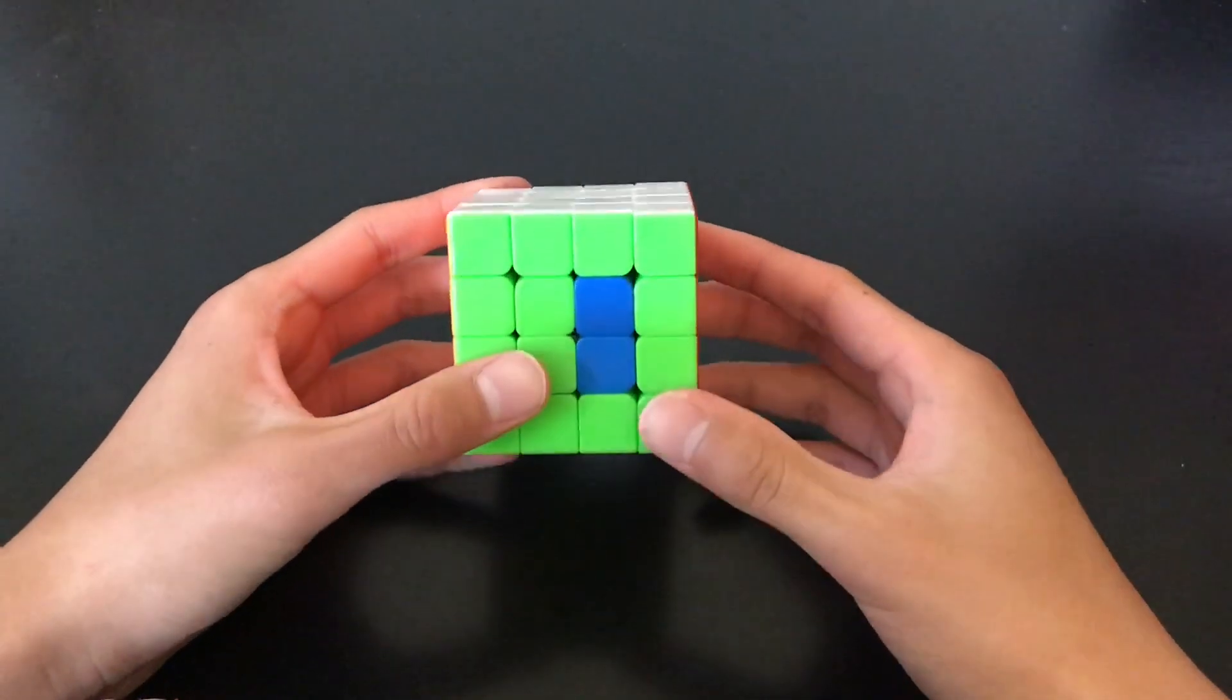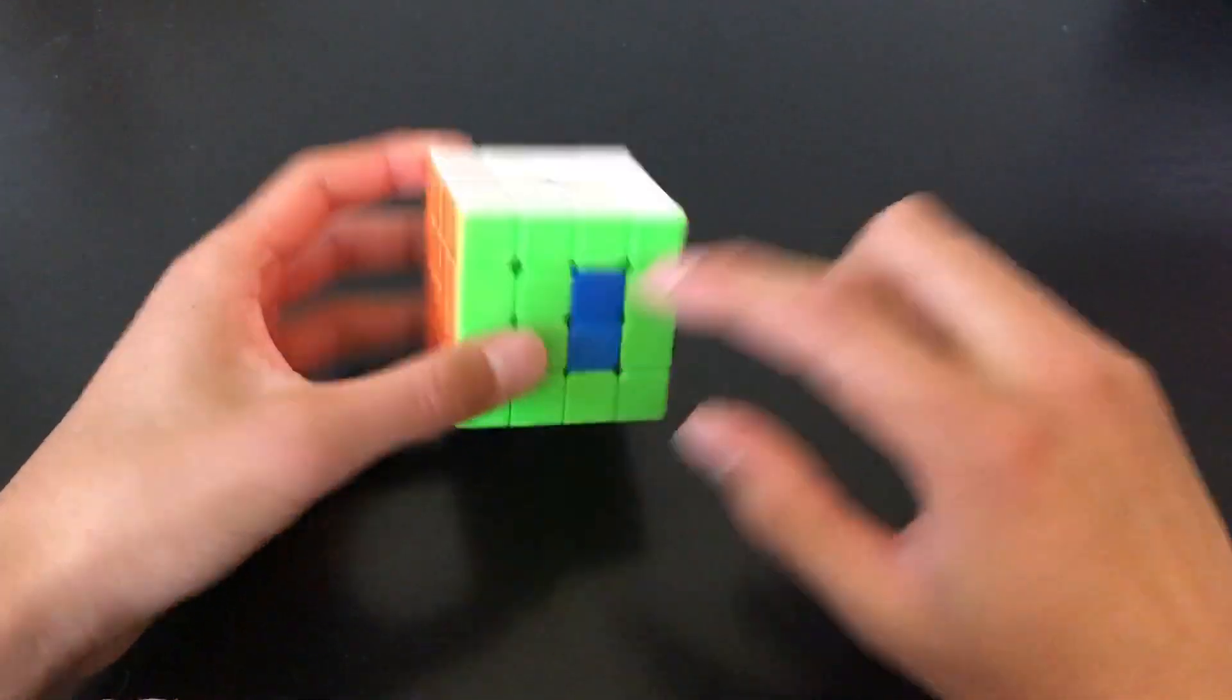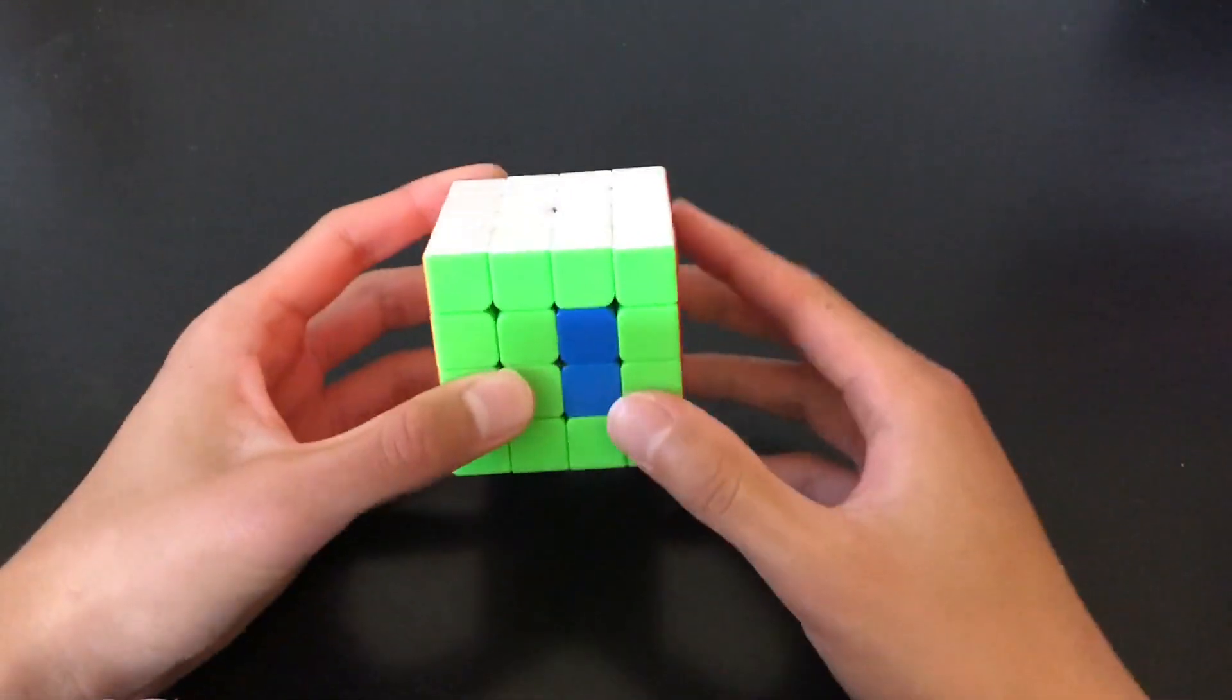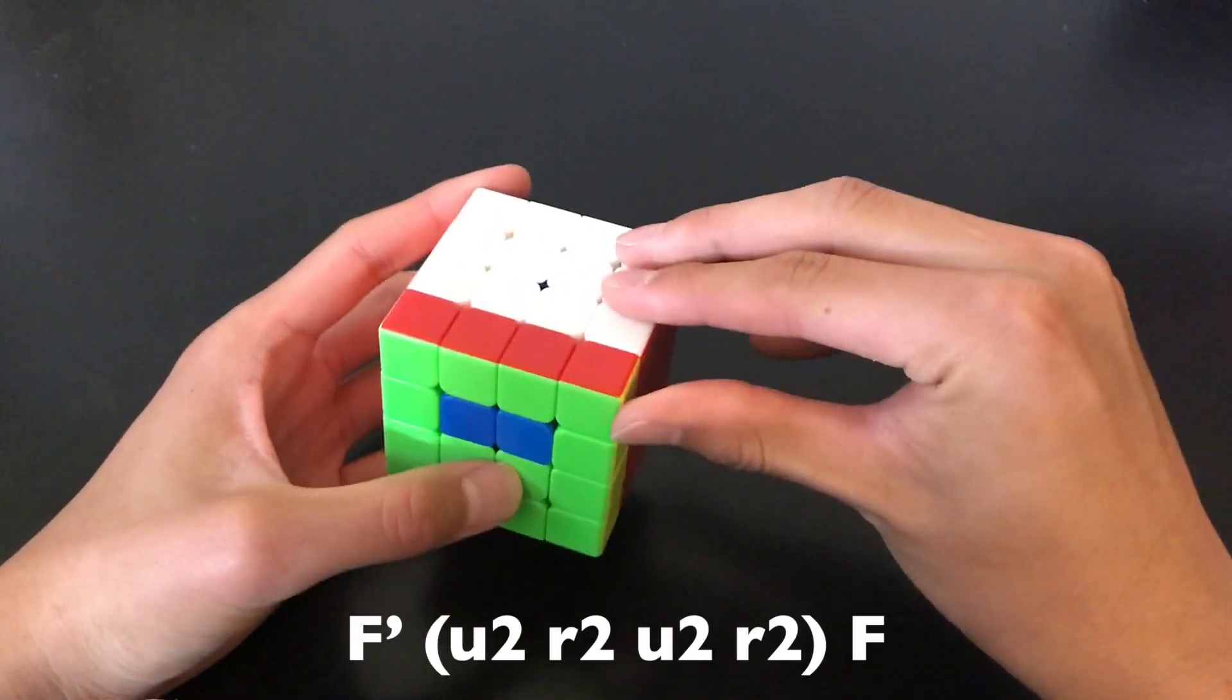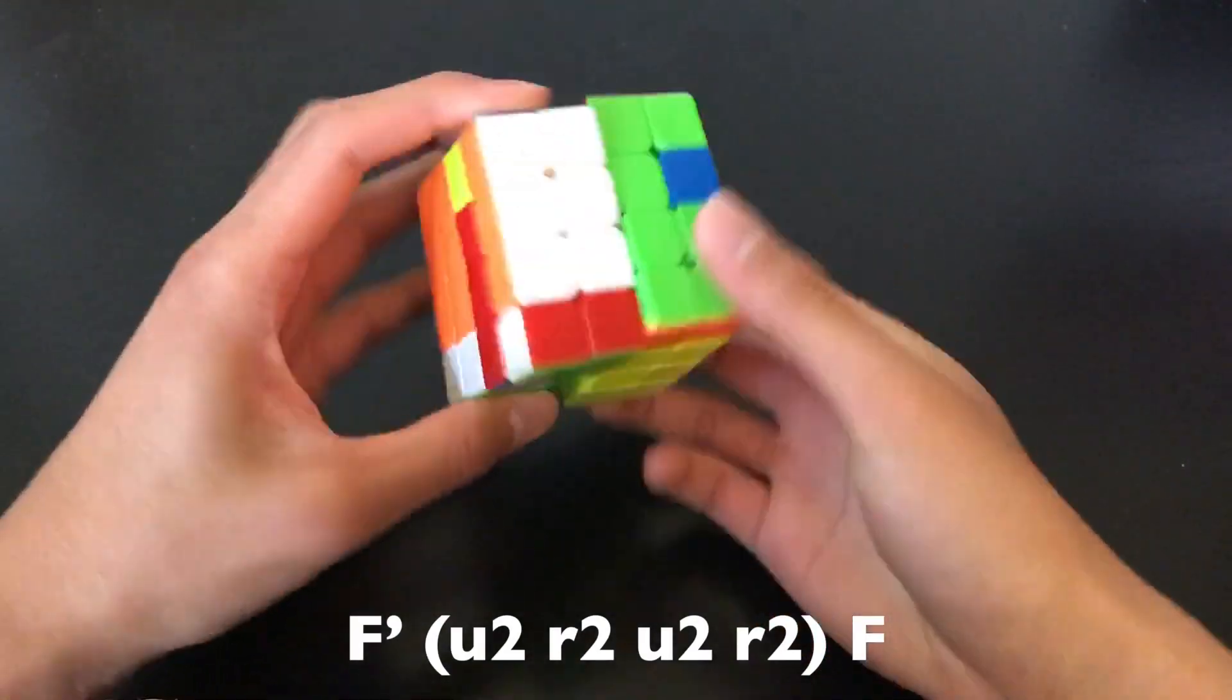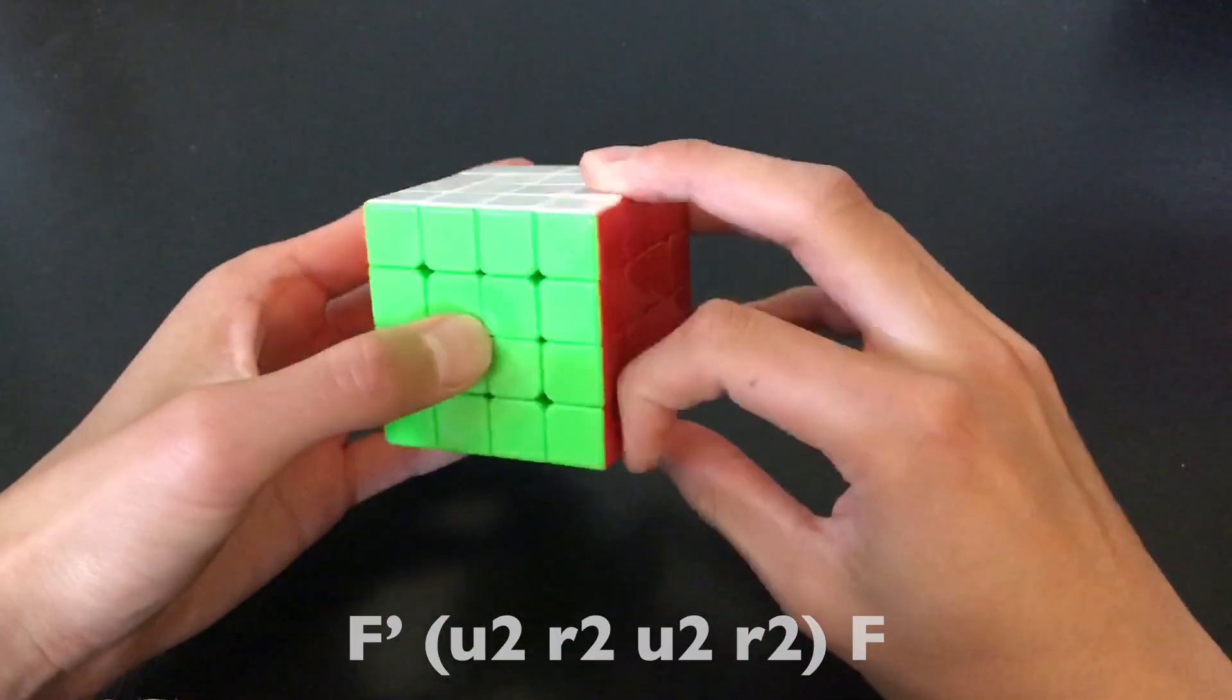Note that you can also set up to these cases. So, for example, if we have this here and this here, they're not directly in position to do a two-center, two-center alg. But we can do an F' setup and then the two-center, two-center alg and then undo the setup.